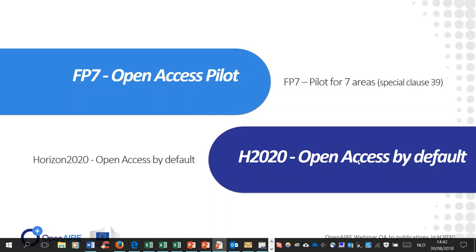The European Commission started with its open access policy in 2007 with the FP7 project, where it was a limited project in some areas. However, in Horizon 2020, open access to publications became the default option for all projects, which should aim to make their publications openly available.